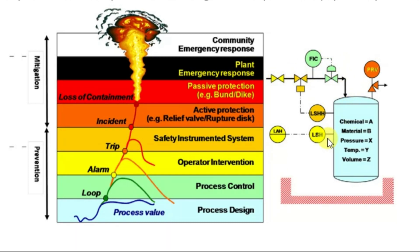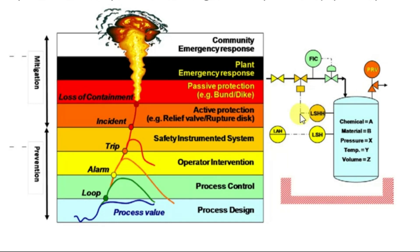There are level switches for high-level indication and another level switch for high-high indication, based on which the emergency block valve will shut. The tank level keeps on increasing and cannot be controlled by the control valve function. When it reaches the level switch high-high limit, the sensor will sense and give a signal to close this emergency block valve. This is the operation sequence.